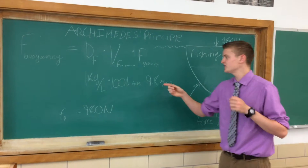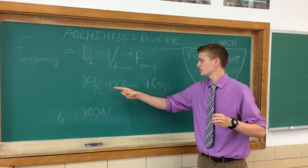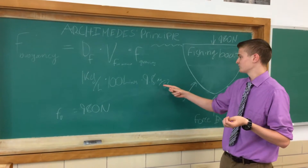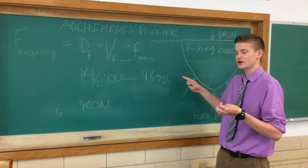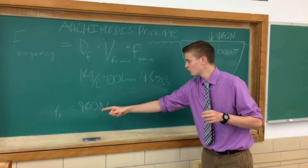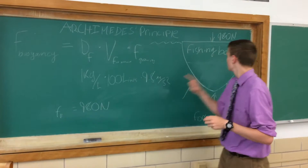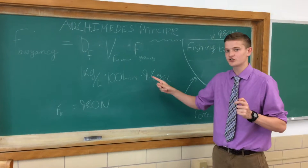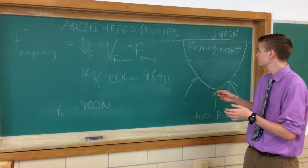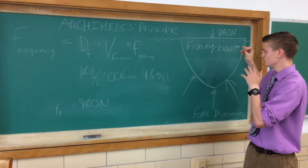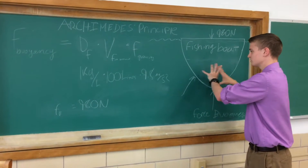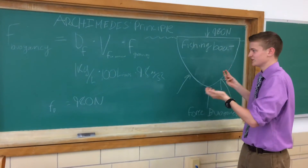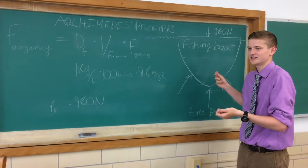So will a boat of this size float? Using Archimedes' principle, the density of the fluid is 1 kilogram per liter and gravity is 9.8 meters per second squared. To achieve the force of 980 newtons that we need, we need to displace 100 liters of water. That translates to: 980 newtons are needed to displace 100 liters of water so that the ship will float. If it doesn't achieve that, it's not floating.